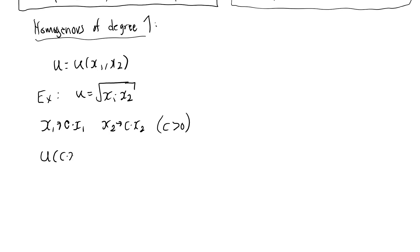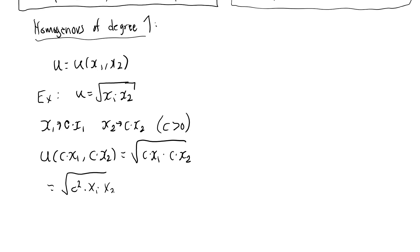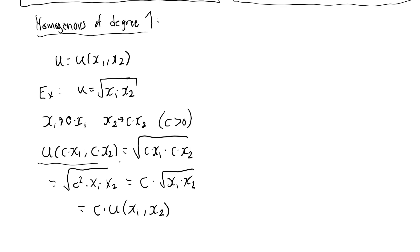We then have a utility function evaluated at cx1 and cx2, which equals the square root of cx1 times cx2. This is the same as the square root of c squared times x1 times x2. Since c is strictly positive, the square root of c squared becomes c, giving us c times the square root of x1 times x2. You can see that the utility function evaluated at cx1 and cx2 is precisely equal to c times the utility function evaluated at x1, x2.